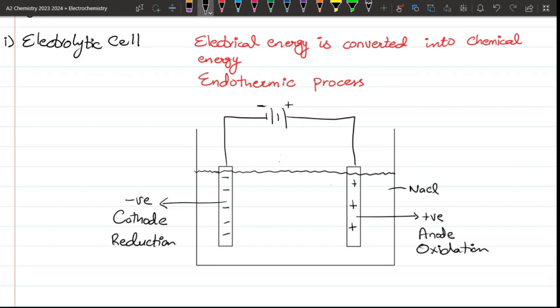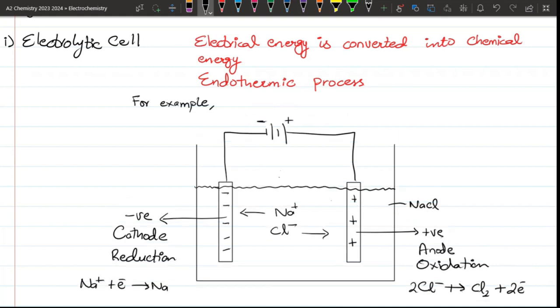The equation is Na+ plus electron gives Na. And 2Cl- gives Cl2 plus 2 electrons. So this is Electrolysis of molten NaCl. So this is Electrolytic cell.